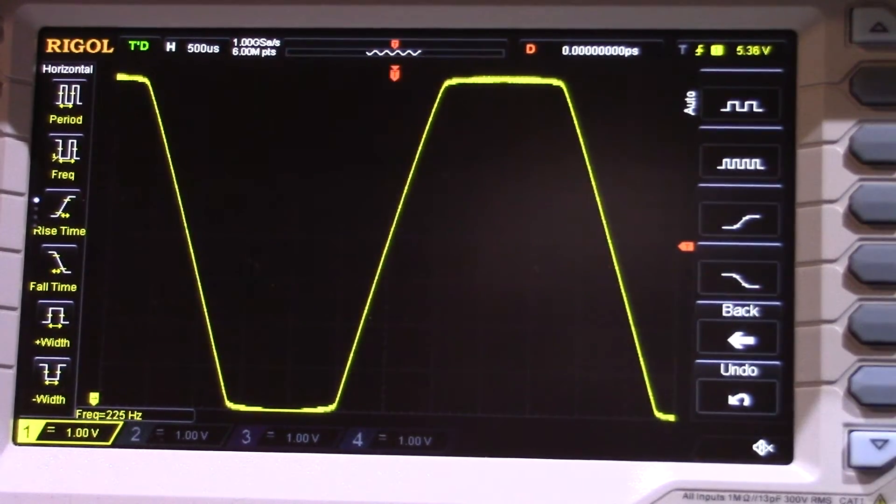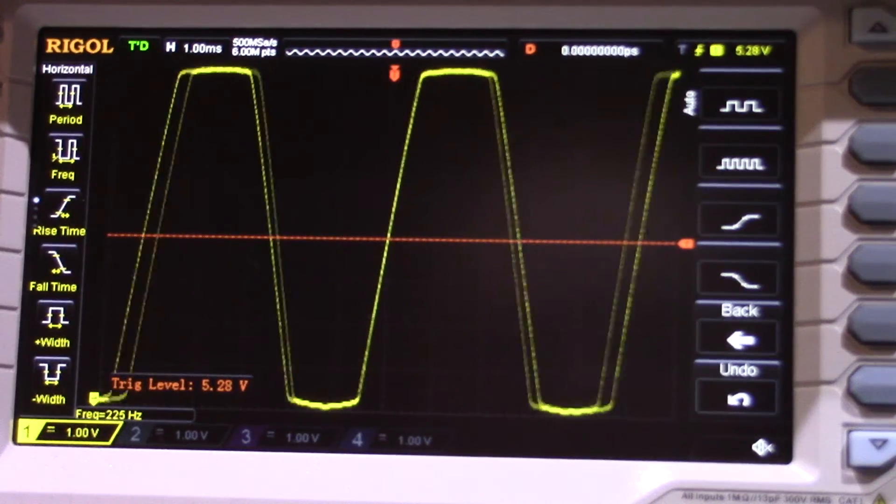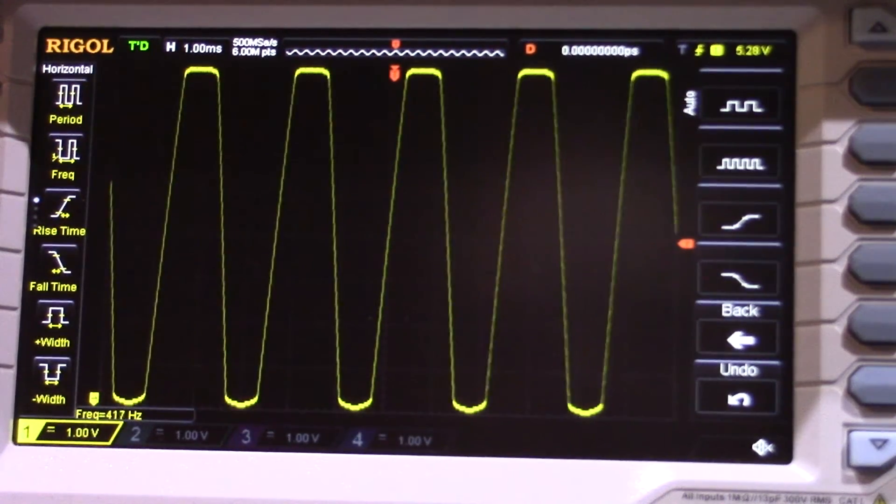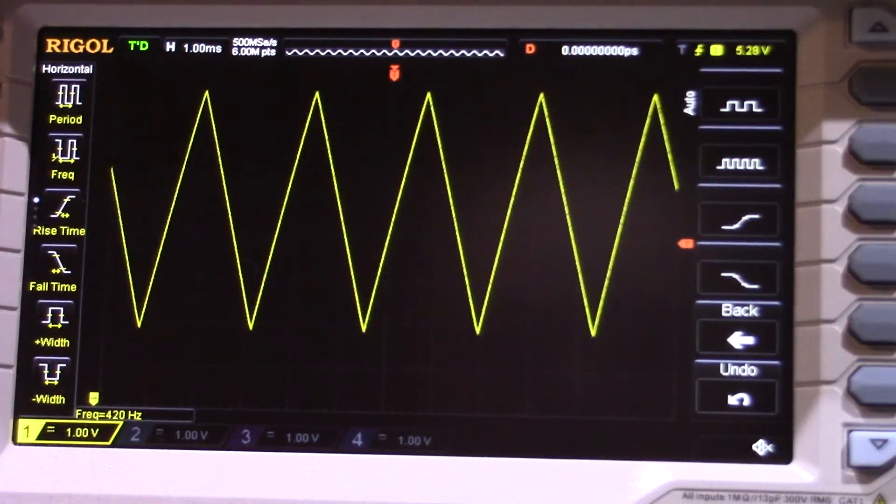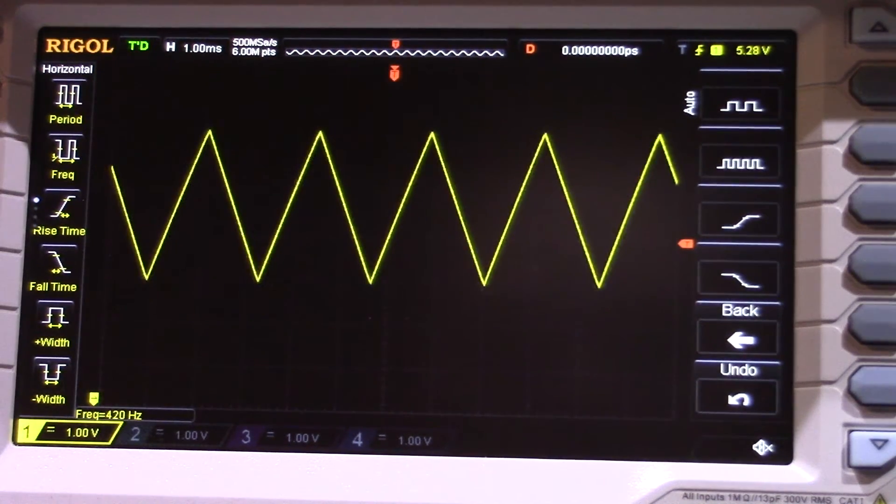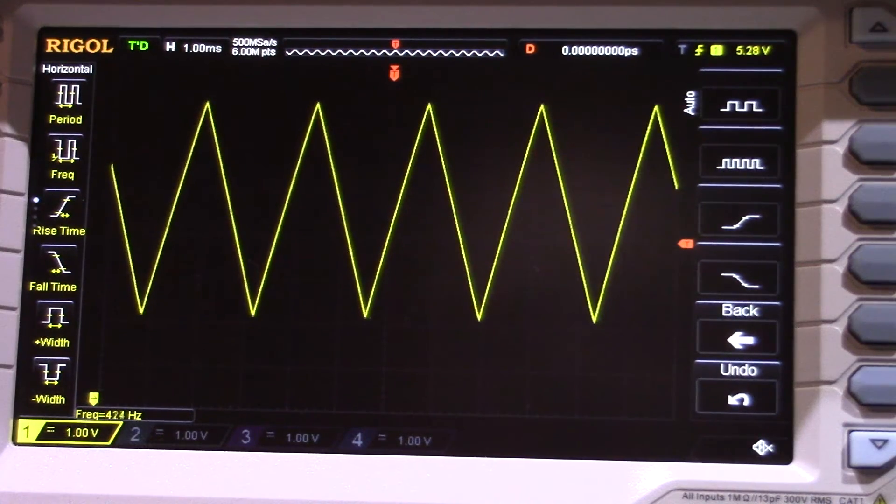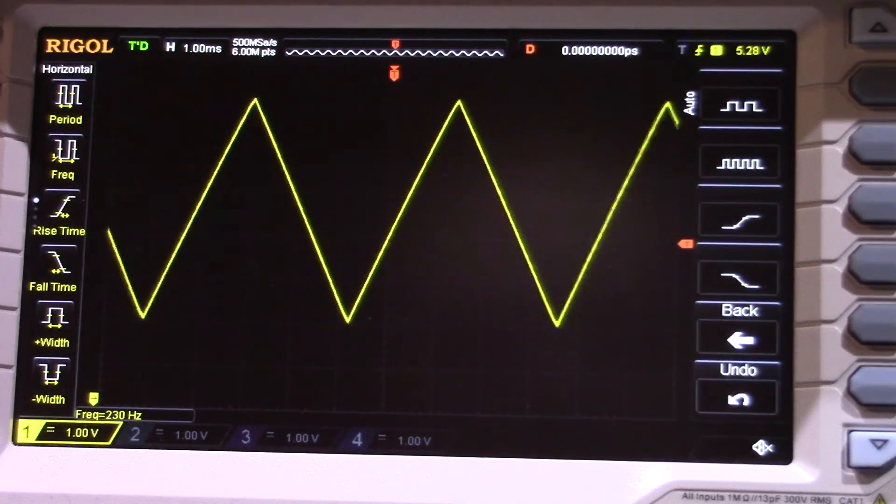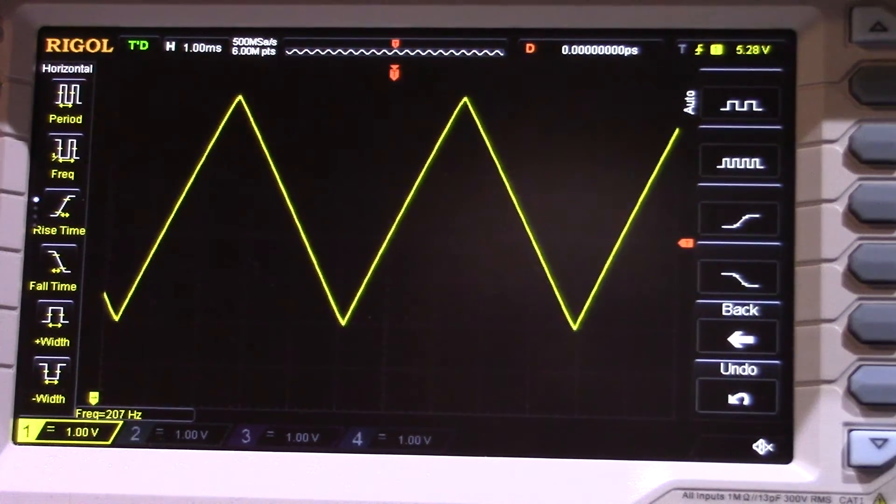Certainly not getting a triangle at the minute. Now I did manage to get a triangle wave up before, but I can't remember what I did. Oh there we are - I just simply need to alter the amplitude of the waveform there. So there's our triangle wave there, that's looking nice, it's working absolutely fine.